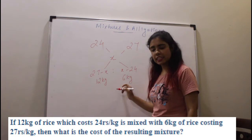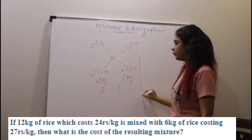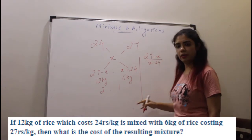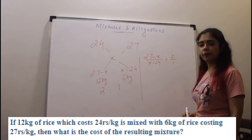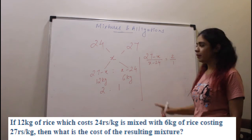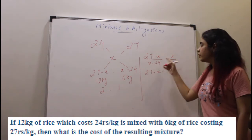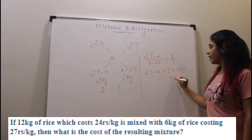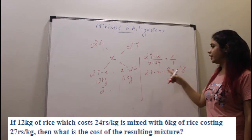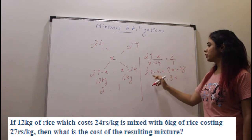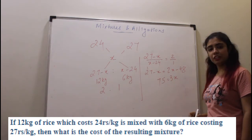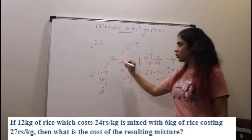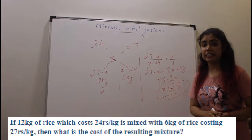So 12 is to 6 is the same as 2 is to 1. So (27 minus x) upon (x minus 24) equals 2 to 1. Cross multiplying: 27 minus x = 2x minus 48. So 3x = 75, meaning x = 25 rupees. The cost of this mixture is going to be 25 rupees — that is your answer.